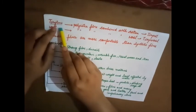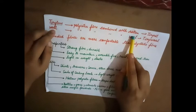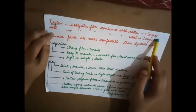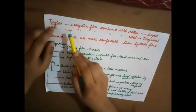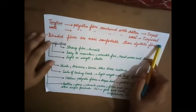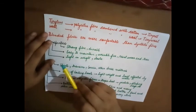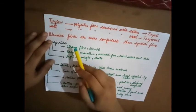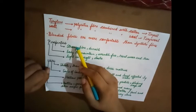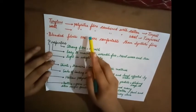Now Terrylene, suppose Terrylene is combined with cotton, then it is known as Terricot. And suppose Terrylene is combined with wool, it is known as Terrywool. So these are known as blended fibers and they are much more comfortable than synthetic fiber. Here you are trying to combine the properties of natural fiber as well as synthetic fiber.